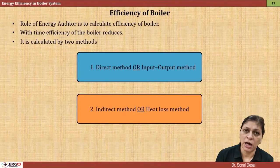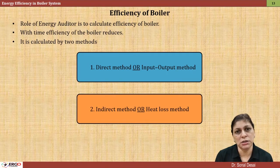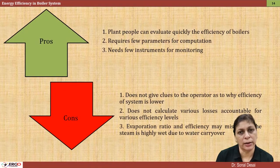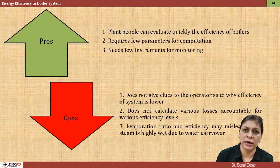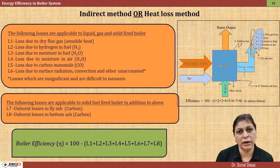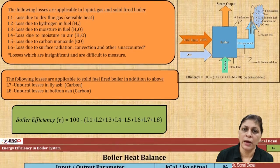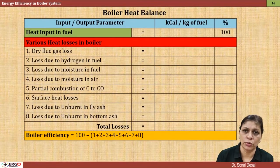The major aspect of this video is the calculation of efficiency. Two methods are there — direct and indirect method. Both methods are explained very well. Their numericals are shown and comparisons are made. When not to use the direct method, when to go with the indirect method, what losses to consider in a boiler, how to calculate them, and numerical support for those calculations — all of that is explained.